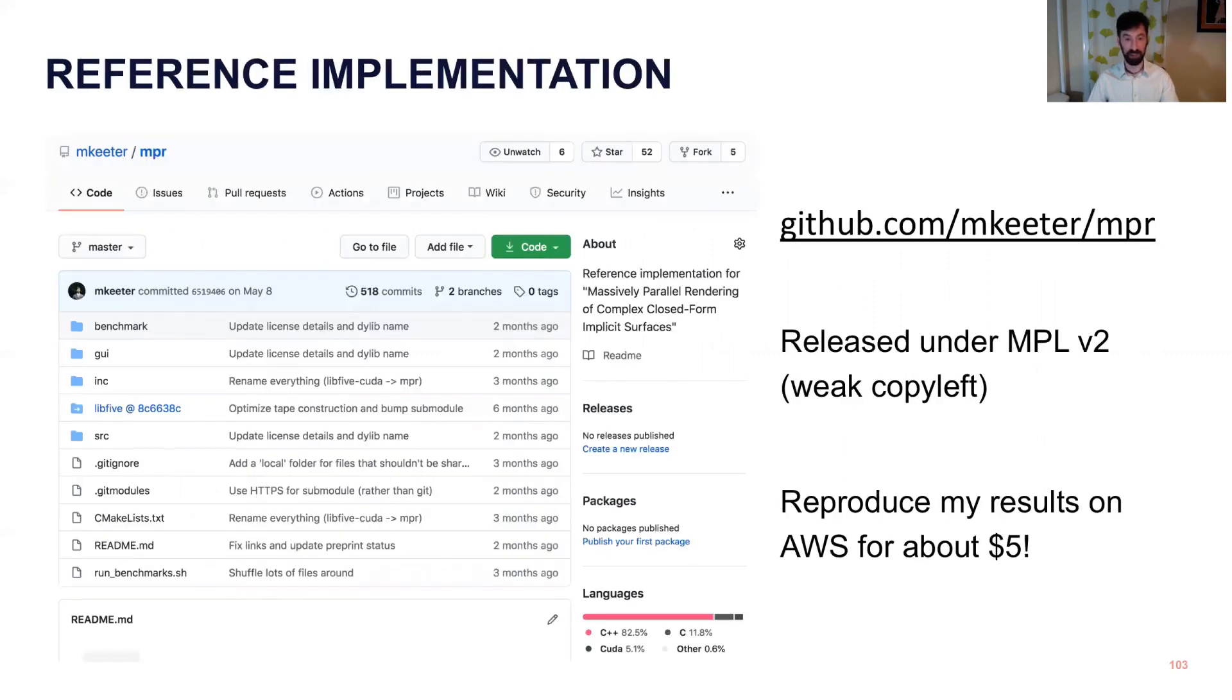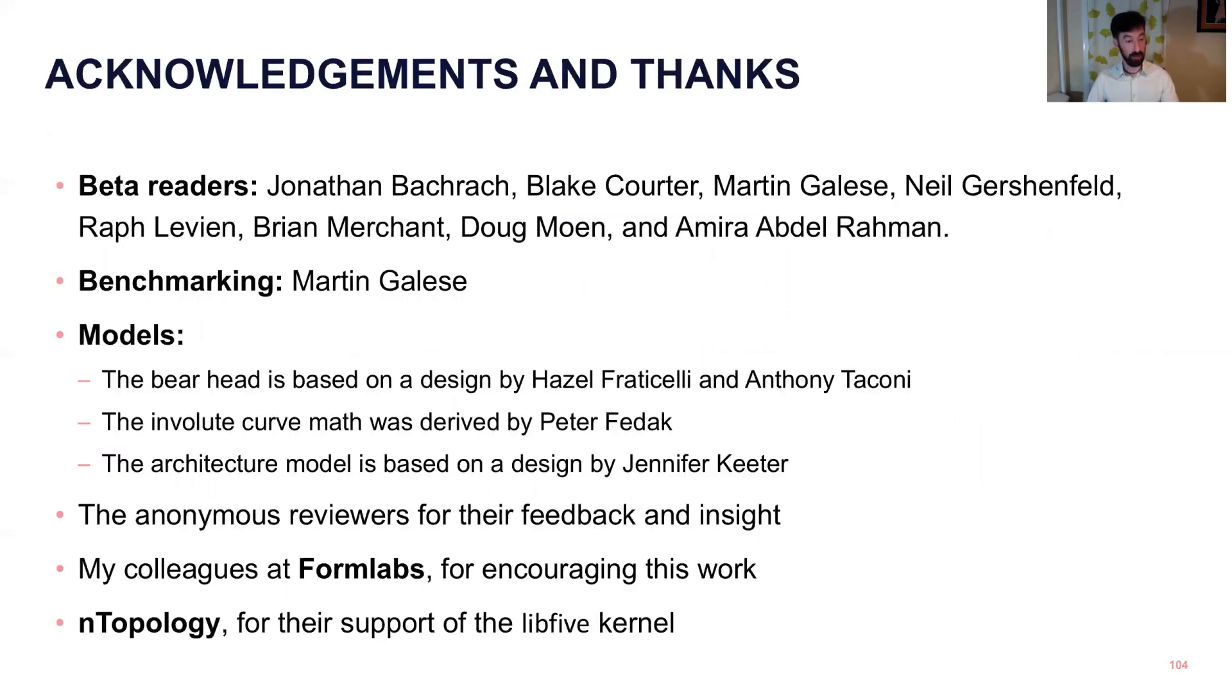We have a reference implementation. It's on my GitHub, github.com/mketer/mpr. And one of the cool things about this is that you can reproduce the results in this paper for about $5 in compute time on AWS. And if you have problems doing that, then you should open up an issue and let me know.